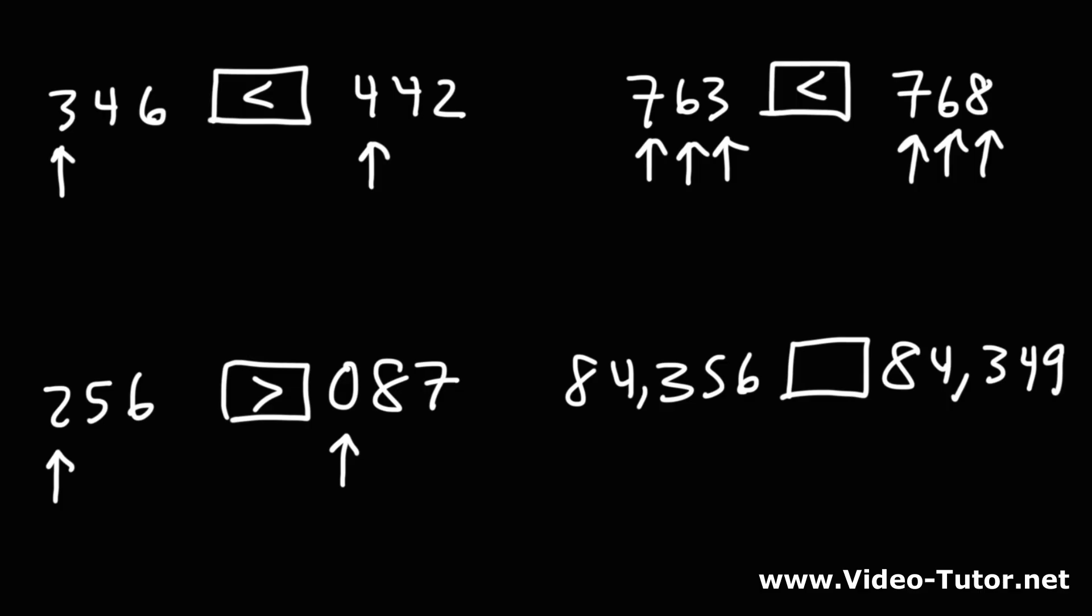Now, what about 84,356 versus 84,349? Which one is greater? We're looking at the outermost digit. The eights are equal. Next, the fours are equal. The threes are equal. And then here we have a difference. Five versus four. Five is greater than four. So 84,356 is greater than 84,349.